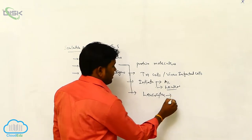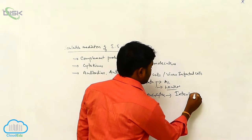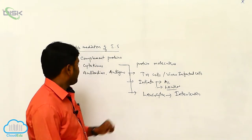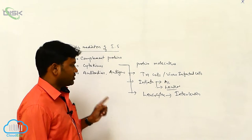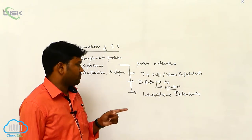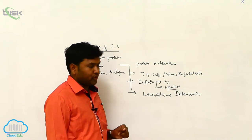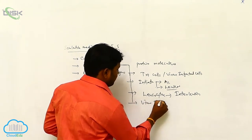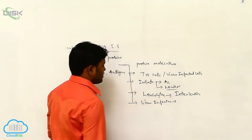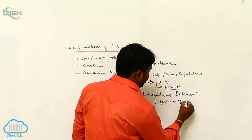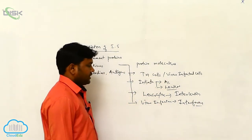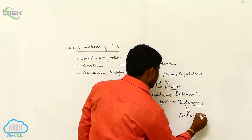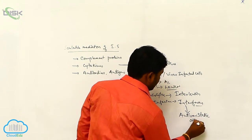When cytokines are secreted by leukocytes, they are called interleukins, which are responsible for the differentiation of cells of the immune system. If cytokines are secreted by virus-infected cells, they are called interferons, and they induce the antiviral state of other cells.